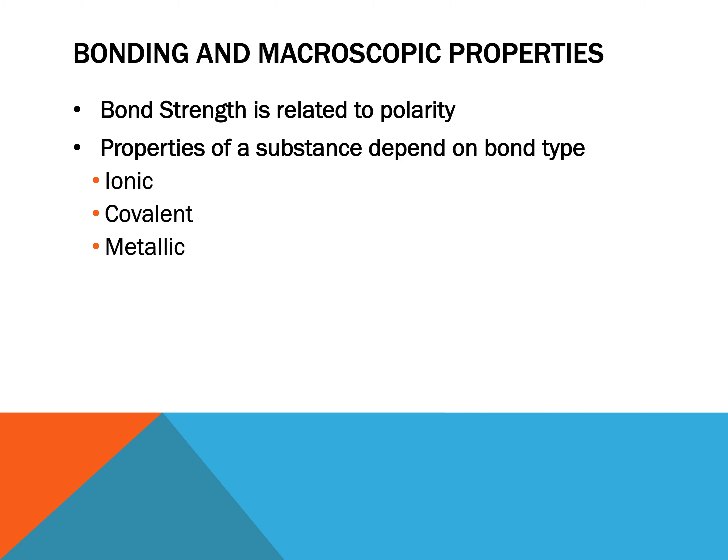Now bonding, or bond strength, is related to polarity. Typically, the more polar a bond is, the stronger the bond is. And properties of a substance depend on the bond type. So we've already looked at the properties of ionic versus covalent bonding, and we know they have very different properties. And that is because they have different bond strengths.